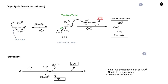The pyruvate kinase reaction occurs in two steps. In the first step, phosphoenolpyruvate phosphorylates ADP to form ATP. The enol product then undergoes enol-keto tautomerization, yielding the ketone pyruvate. And pyruvate is the end of the pathway.